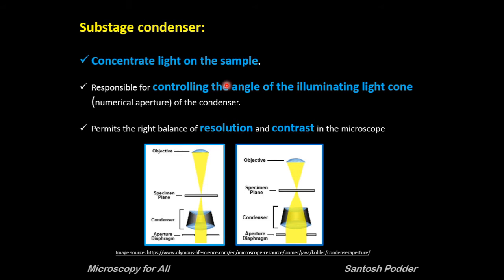The function of the condenser is to concentrate the light on the sample. The condenser is responsible for controlling the angle of the illuminating light cone, hence the numerical aperture of the condenser. Basically, the condenser controls the angle of illumination, which permits the right balance of resolution and contrast in the microscope. As you open the aperture diaphragm, you can see the cone of light illuminating your sample increasing. Correct adjustment of the sub-stage condenser is probably the most critical aspect of achieving proper light illumination. Unfortunately, condenser misalignment and improperly adjusted condenser aperture diaphragm are the main sources of image degradation and poor image quality.